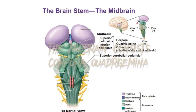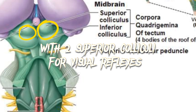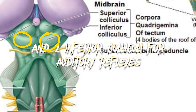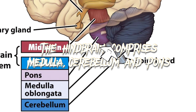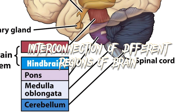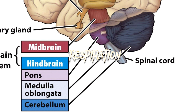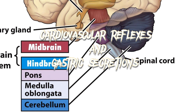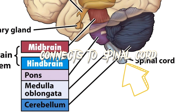The midbrain consists of the corpora quadrigemina, with two superior colliculi for visual reflexes and two inferior colliculi for auditory reflexes. Through the midbrain runs the cerebral aqueduct. The hindbrain comprises the medulla and cerebellum. The cerebellum controls interconnection of different regions. The medulla controls respiration, cardiovascular reflexes, and gastric secretion, and connects to the spinal cord.